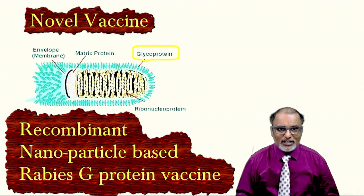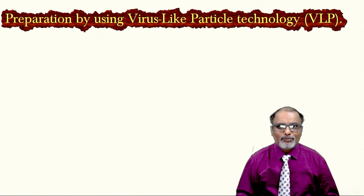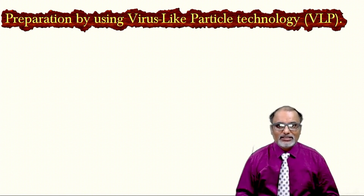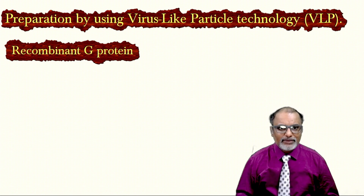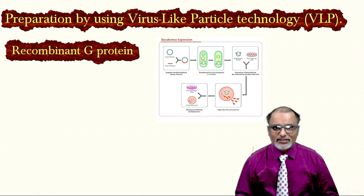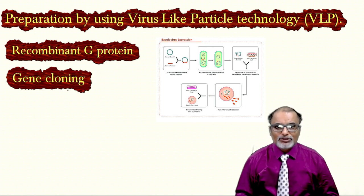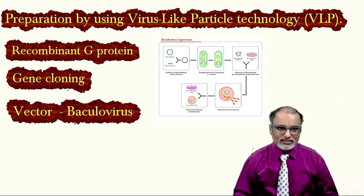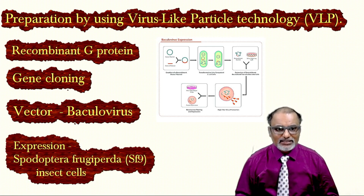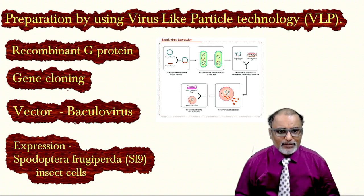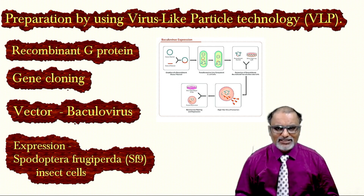The preparation technique used is called VLP — virus-like particle technology. They are making recombinant G protein using gene cloning technology. The vector used is a virus called baculovirus, and the gene is expressed in insect cell lines called Sf9 cell lines (Spodoptera frugiperda cell lines).